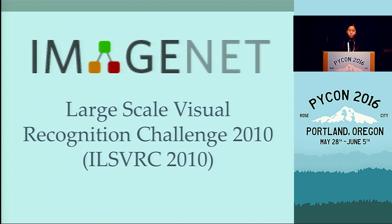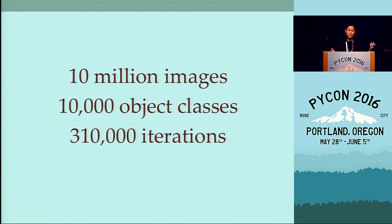The computer vision folks have a similar type challenge called the ILSVRC challenge, which stands for the ImageNet Large Scale Visual Recognition Challenge, where they see who can put classifications on images most efficiently. The dataset they're going off of is the ImageNet dataset, and it has ten million images, ten thousand object classes - cats, dogs, foods, anything you can think of. And this net that we're working with has already been pre-trained on 310,000 iterations.